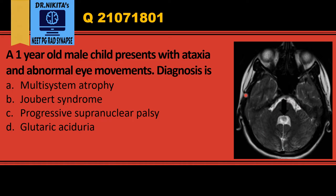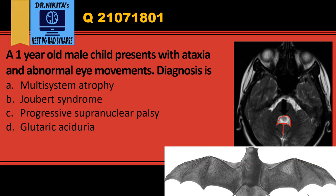Now let's take the diagnosis from the image. On this MRI — it's an MRI because the bone appears black — we can see the fourth ventricle, which is hyperintense white, confirming this is a T2-weighted MRI. What we see here is the shape of the fourth ventricle, which looks like a batwing or umbrella shape.